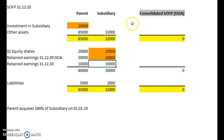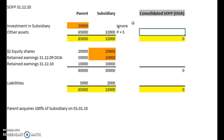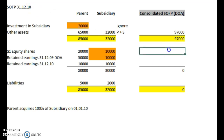Let's quickly do the consolidation. The investment in the subsidiary we ignore. We add the other assets — P plus S, parent plus subsidiary — and they are simply added across to give 97,000. This is the year on from the previous balance sheet in the previous video.